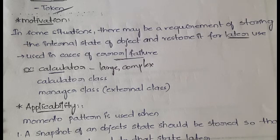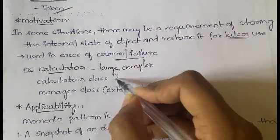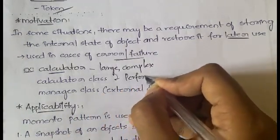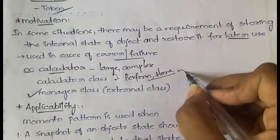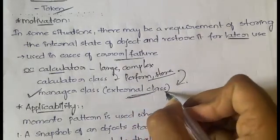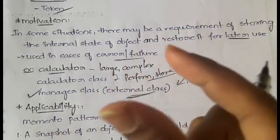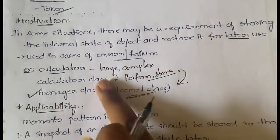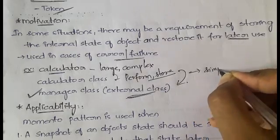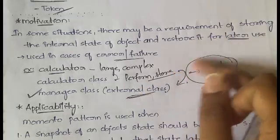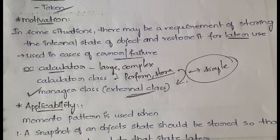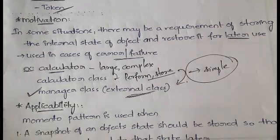In that situation, you need to use an external class called the manager class. All the previous states of the calculator will be stored by this manager class. Without the manager class, the calculator has to perform calculations and also store them. With the manager class, storing previous calculations is handled separately, making the calculator class simple — its only task is to perform calculations. This is where the Memento pattern helps in storing the state of a particular object.